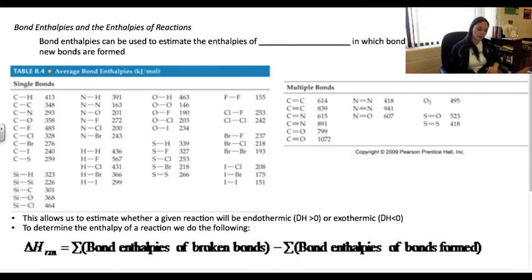Now we look at bond enthalpies and enthalpies of a reaction. Bond enthalpies can be used to estimate the enthalpies of a reaction in which bonds are broken and new bonds are formed. That's how we get a chemical reaction. We have our table there for average bond enthalpies. These are numbers that you will always be given, either in a table form or in the problem itself. These are numbers you don't have to memorize.